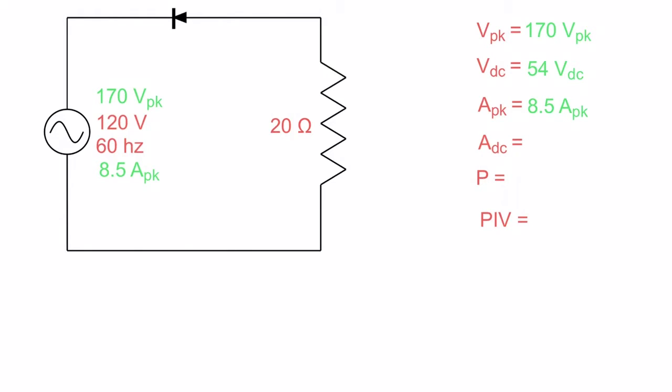So there we go. Now we have our peak current, just as we did with our voltage. Over here, I took 170 volts times 0.318 to get 54 volts DC. We can do the exact same thing with the current. I have 8.5 amps peak. I multiply that also by 0.318, and I get my current, which is 2.7 amps DC. Now we have our peak voltage, our DC voltage, our peak current, our DC current. Our next step is our power.